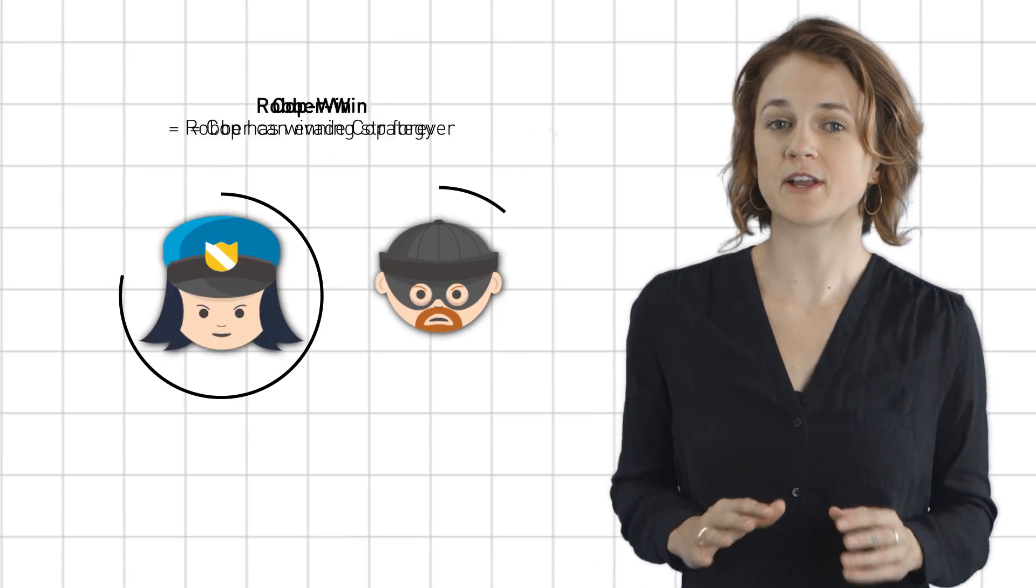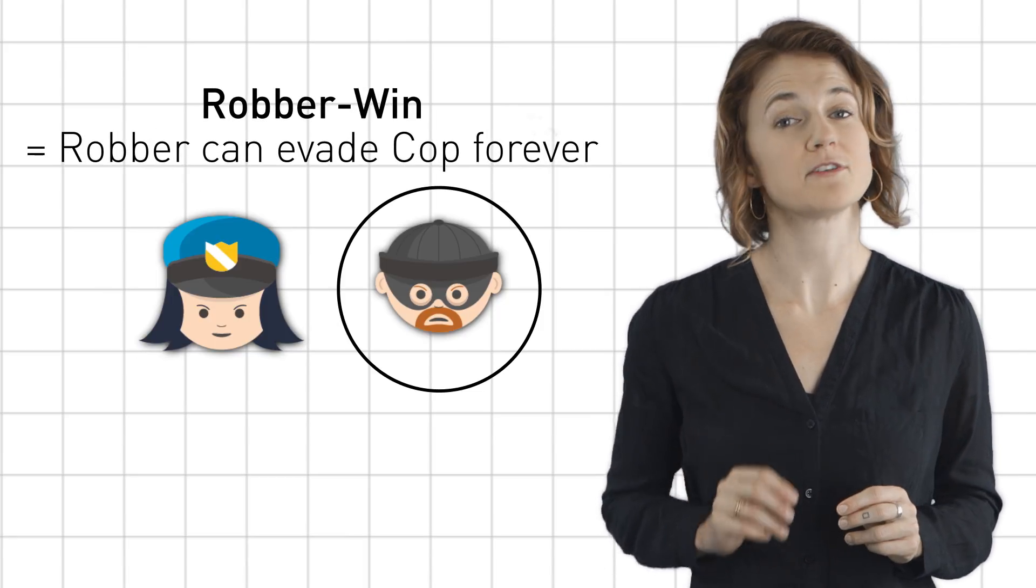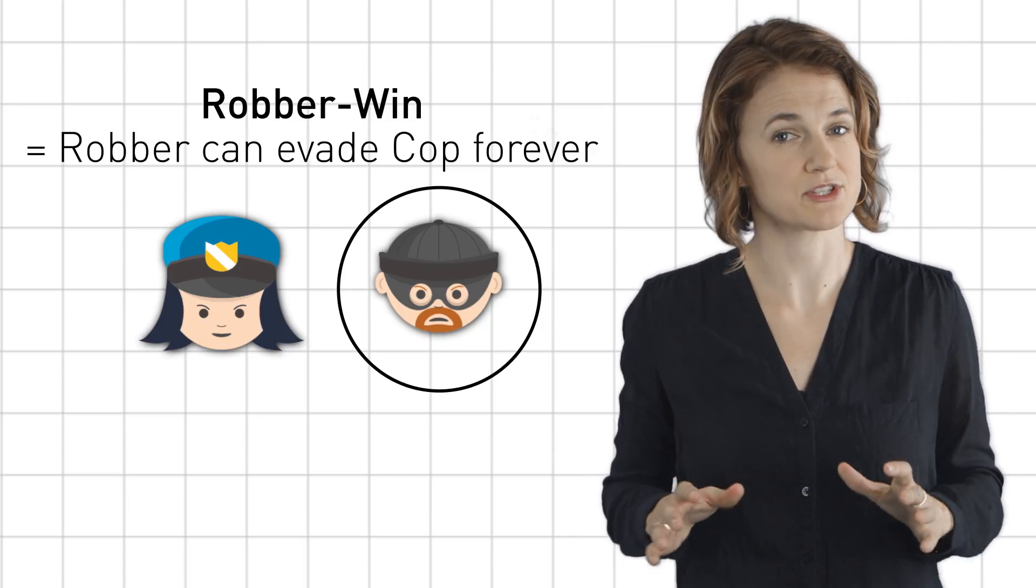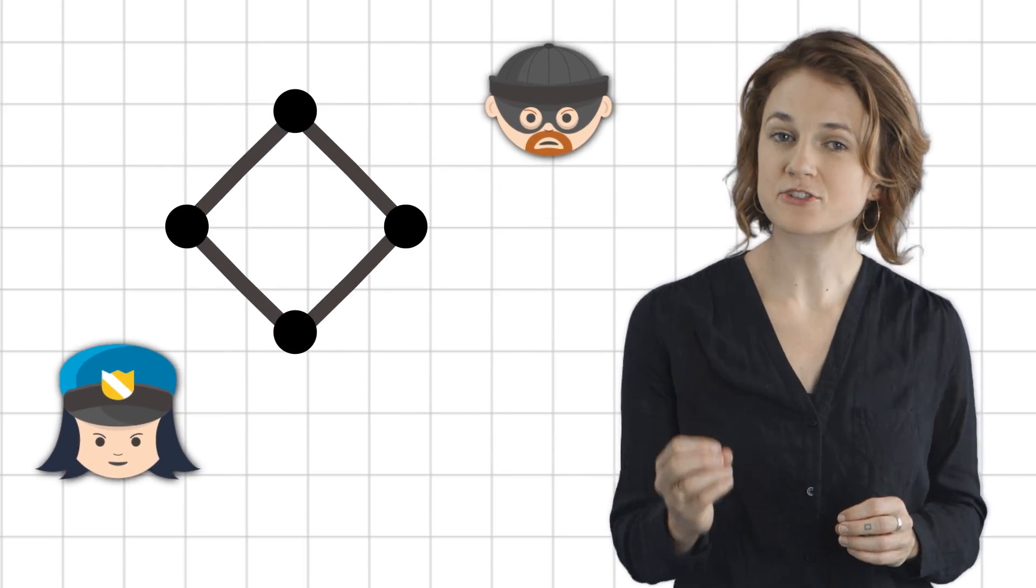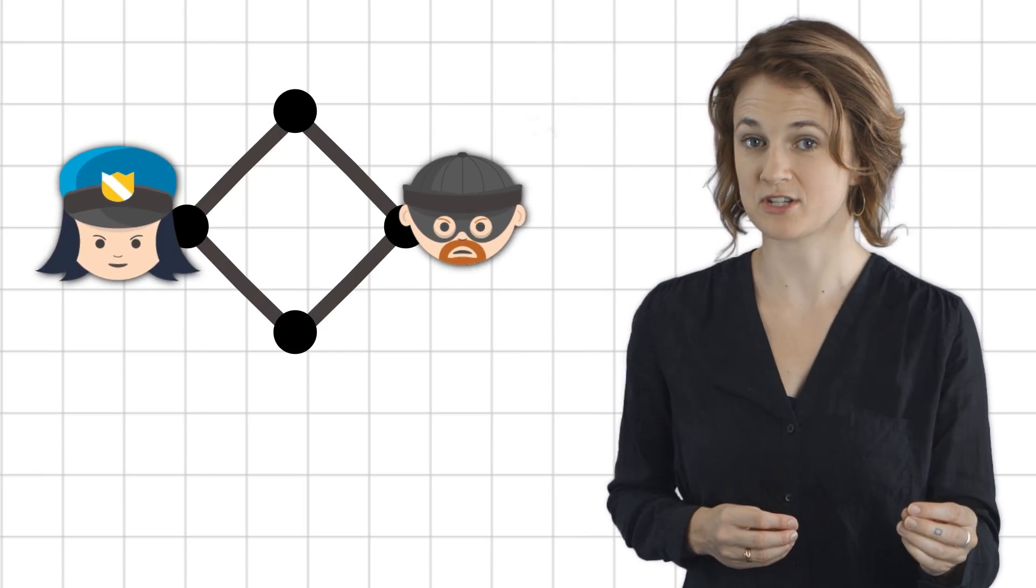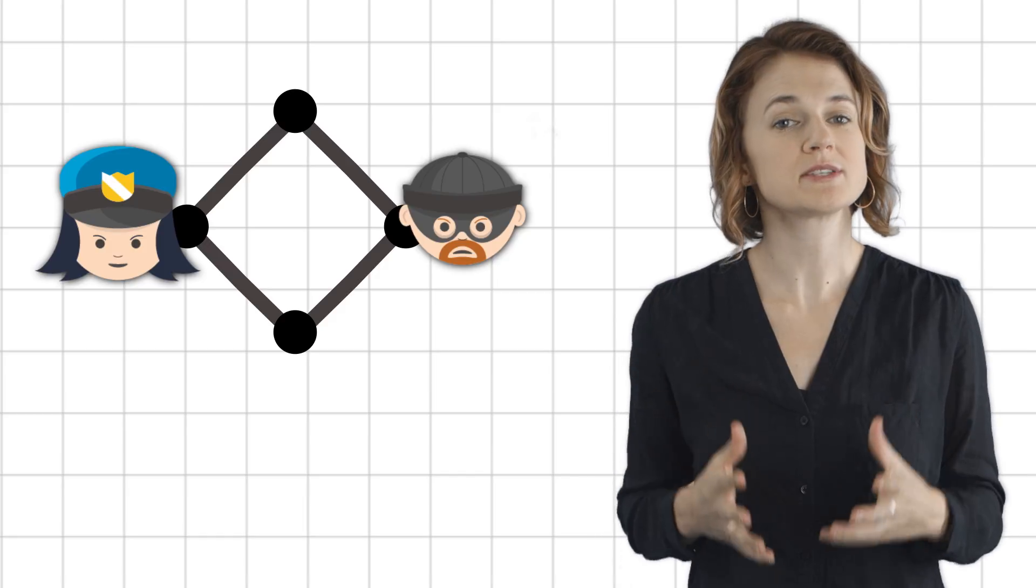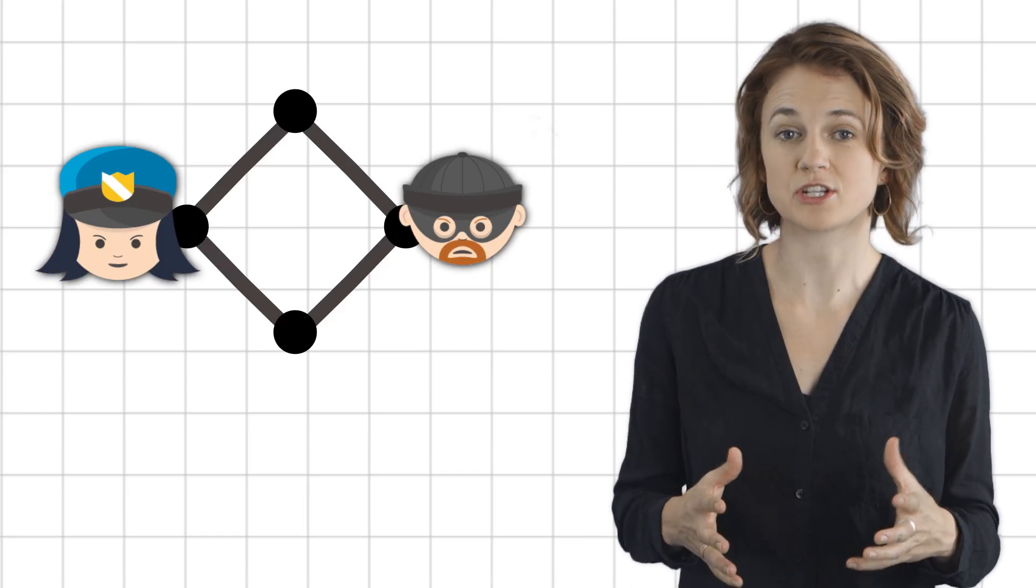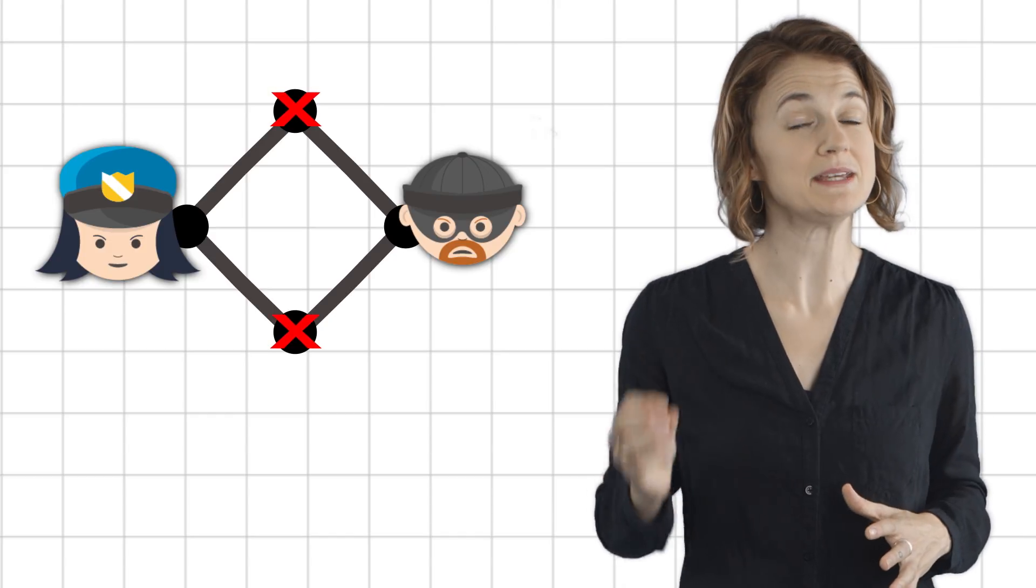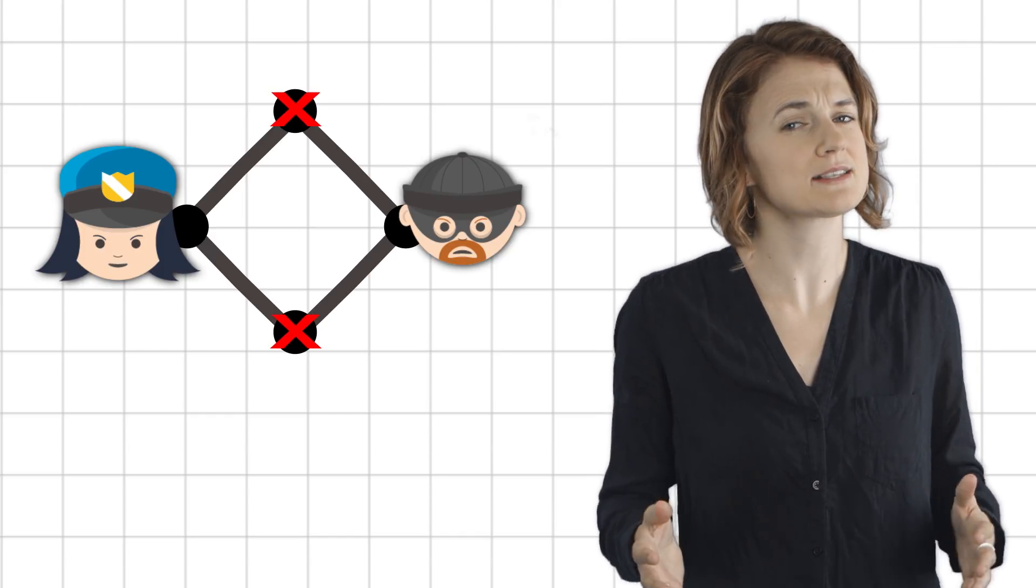Analogously, we could define a graph to be a robber-win graph if the robber can always evade the cop forever, no matter how the cop chooses to move. The cop selects their starting position first, and then the robber selects their starting position. In other words, the starting positions are part of the strategy. So, for example, the robber will never choose to start immediately next to the cop, unless they're forced to.